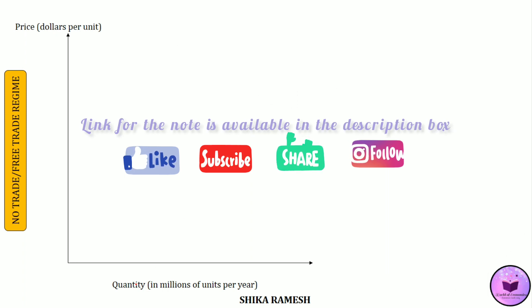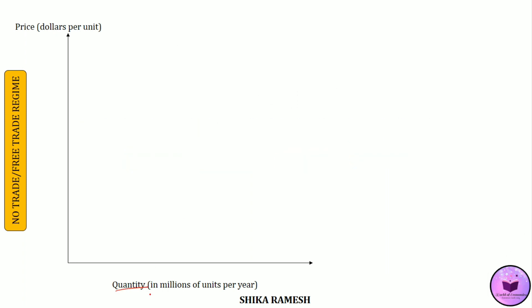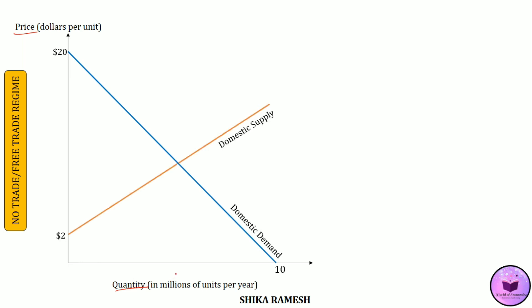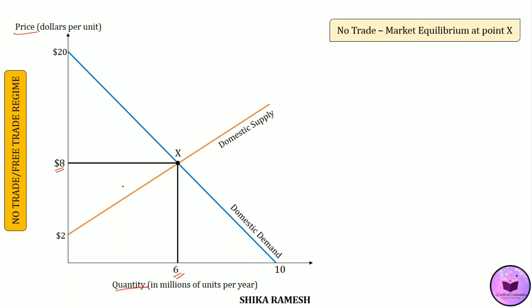In the diagram, the x-axis represents quantity in millions of units per year and the y-axis represents the price in dollars per unit. The domestic demand curve and the domestic supply curve intersect at point X, where the market reaches equilibrium. We have the equilibrium quantity as 6 million units per year and the equilibrium price as $8 per unit.